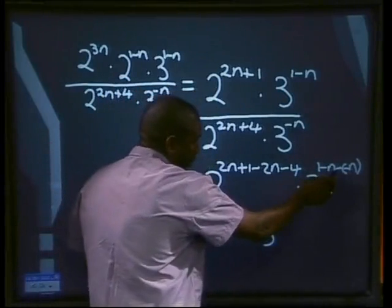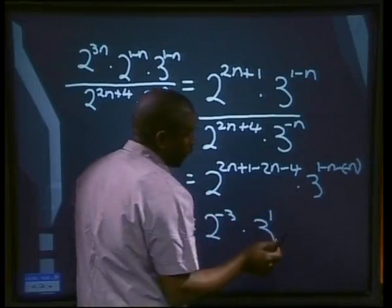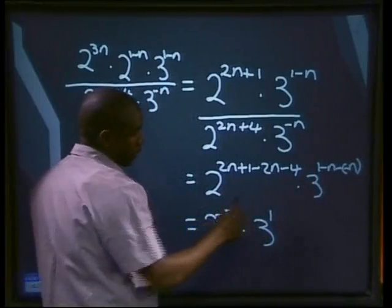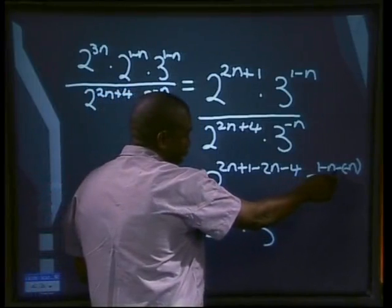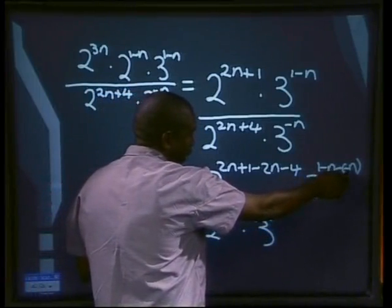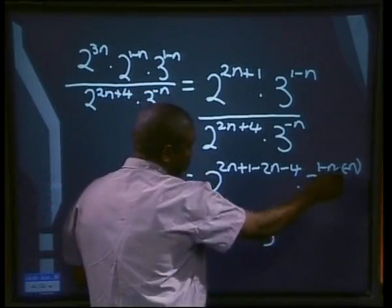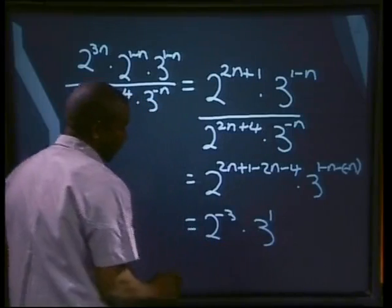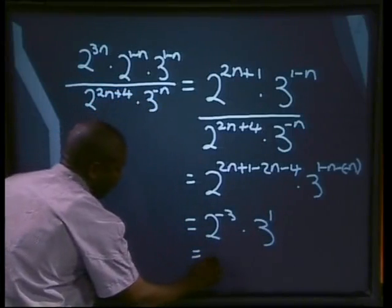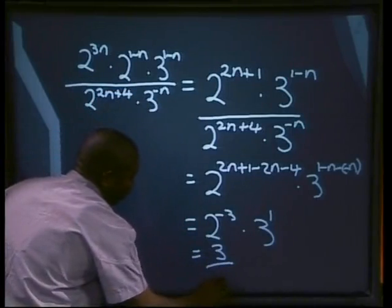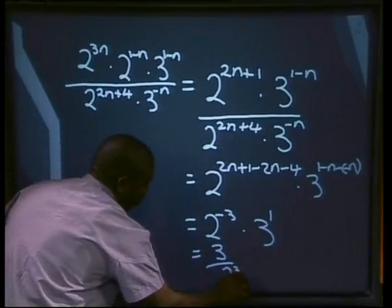Multiplied by 3 to the power of 1 minus n. Now this is very important, guys. Remember, if you have a negative and a negative together, that will give us a positive. So if we have a negative n plus a positive n, that will give us 0, so we're left with 3 to the power of 1. Our solution here will be 3 over 2 to the power of 3.